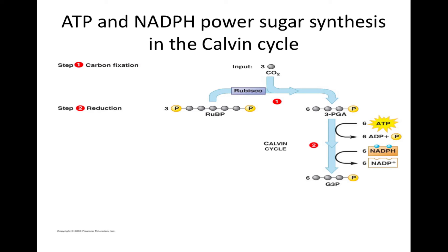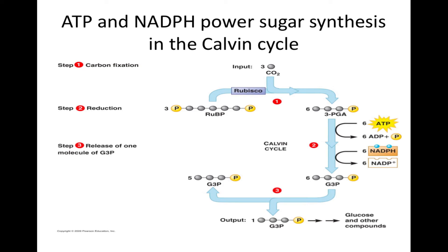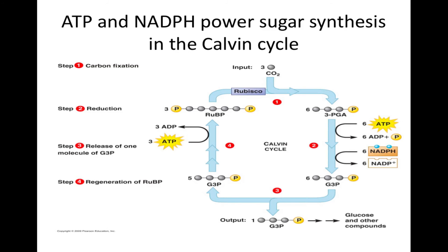To make a molecule of G3P, the cycle must incorporate the carbon atoms from three molecules of carbon dioxide. For every three carbon dioxide molecules fixed, one G3P molecule leaves the cycle as a product, and the remaining five G3P molecules are rearranged. Regeneration of RuBP uses energy from ATP to regenerate three molecules of RuBP. Note that for the net synthesis of one G3P molecule, the Calvin cycle consumes 9 ATPs and 6 NADPH molecules, which were provided by the light reactions.